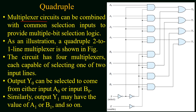Multiplexer circuits can be combined with common selection inputs to provide multiple-bit selection logic. For example, a quadruple 2-to-1 line multiplexer has 4 multiplexers, each capable of selecting one of two input lines. We have two inputs A and B, both of 4 bits: A equals A3, A2, A1, A0 and B equals B3, B2, B1, B0. For selecting a single bit among a 4-bit number we will use four 2-to-1 line multiplexers.